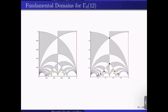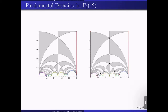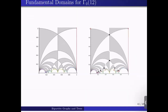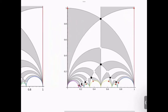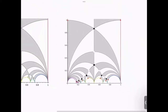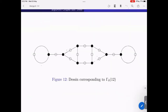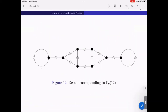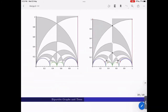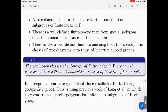Here is the fundamental domain for Γ₀. Two tiles meeting at a vertex give a white vertex; three tiles meeting give a black vertex; tiles meeting on the boundary are labeled red or blue. This is the theorem I am trying to extend to the Hecke triangle group setting — in particular these correspondences between spatial polygons, T-diagrams, and bipartite cubic graphs.